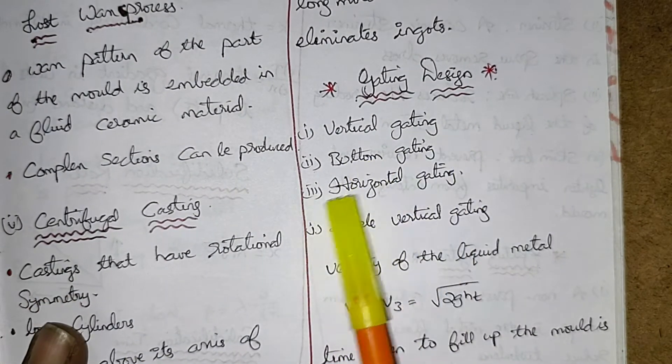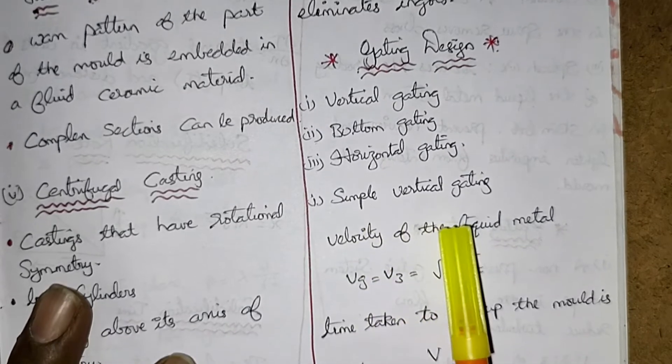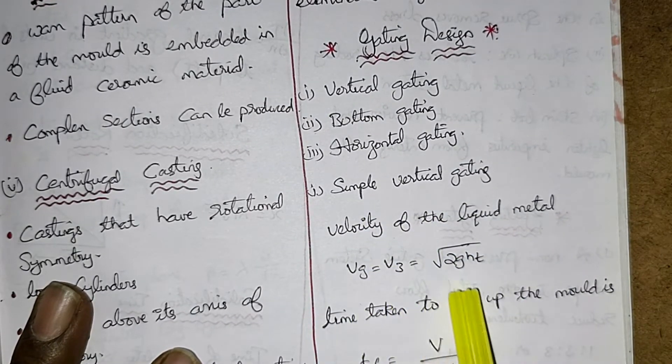Now we will discuss gating design. It is vertical gating, bottom gating, horizontal gating. Types of gating: simple vertical gating, velocity of the liquid metal Vg equal to V3 equal to root 2g*Ht.